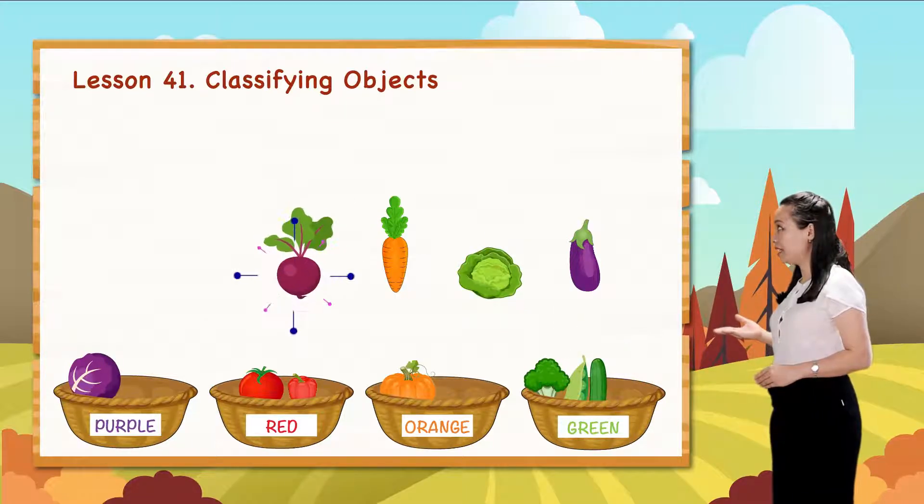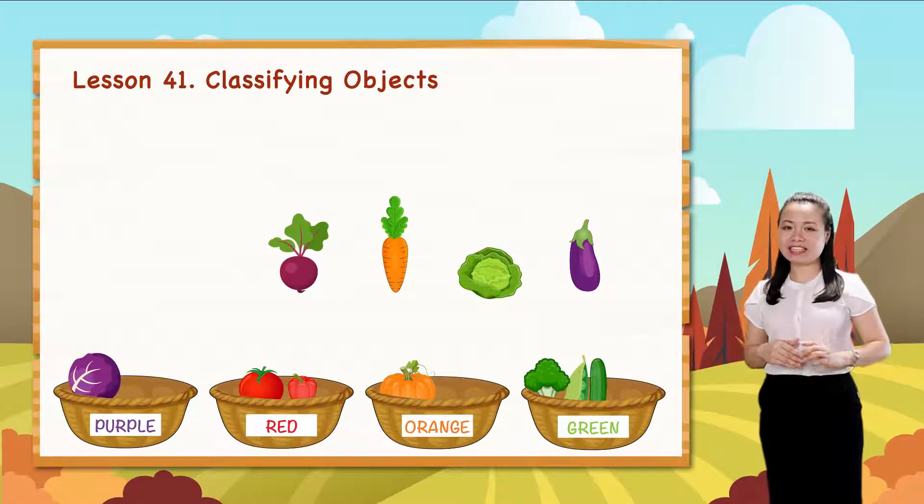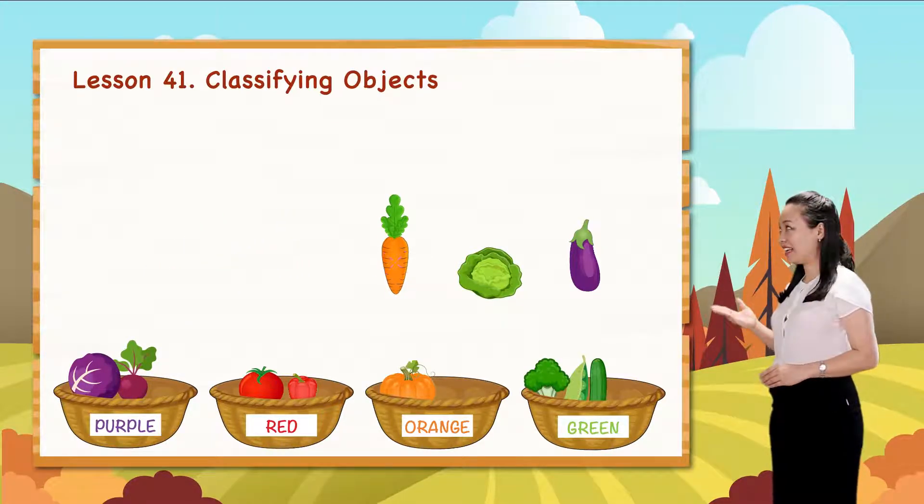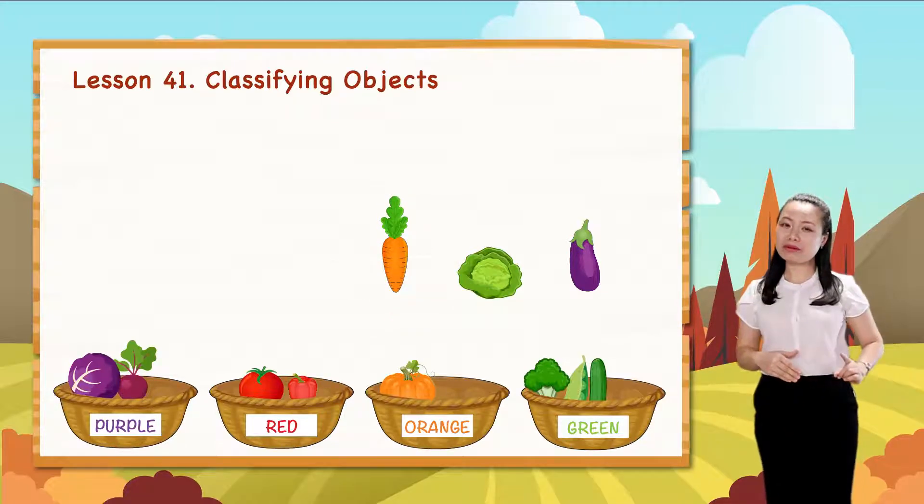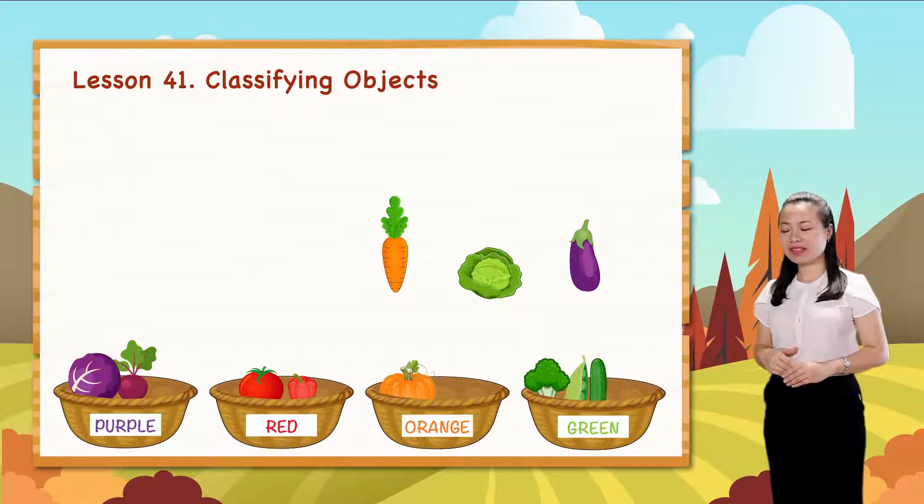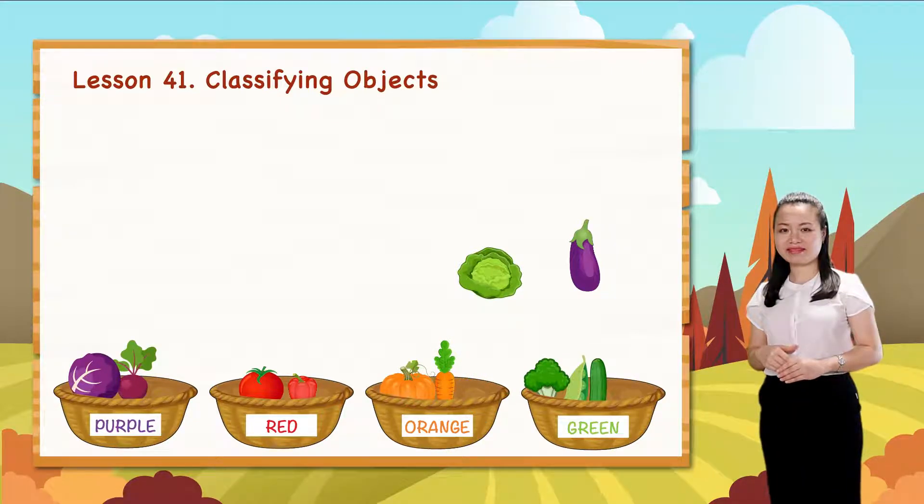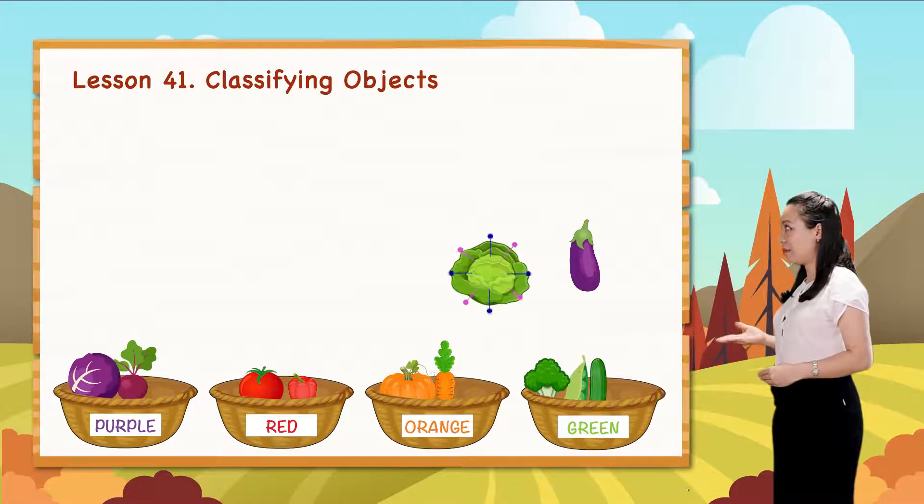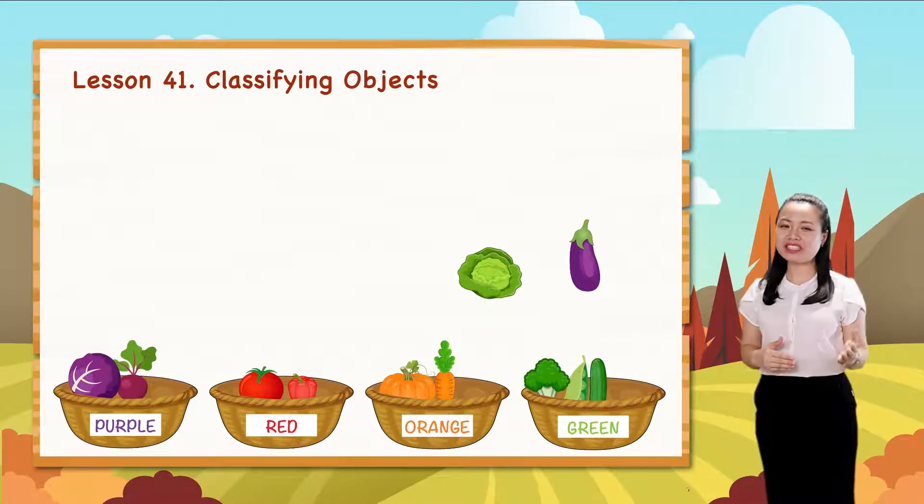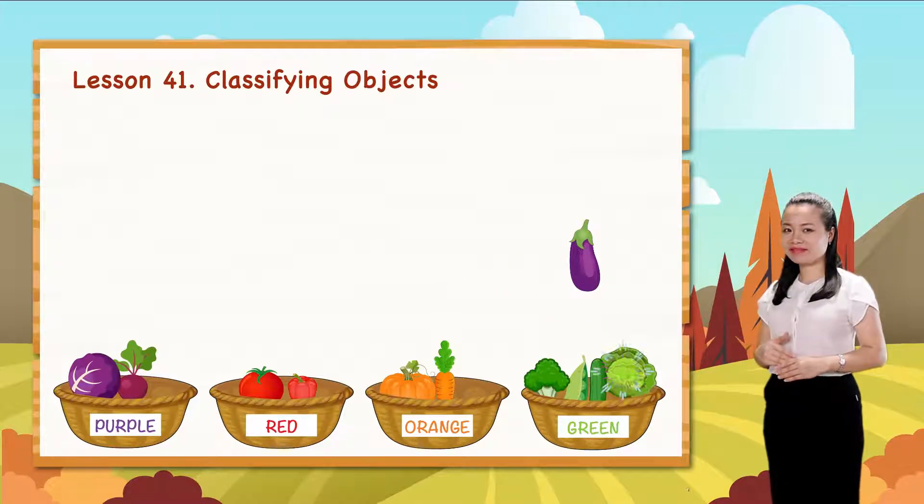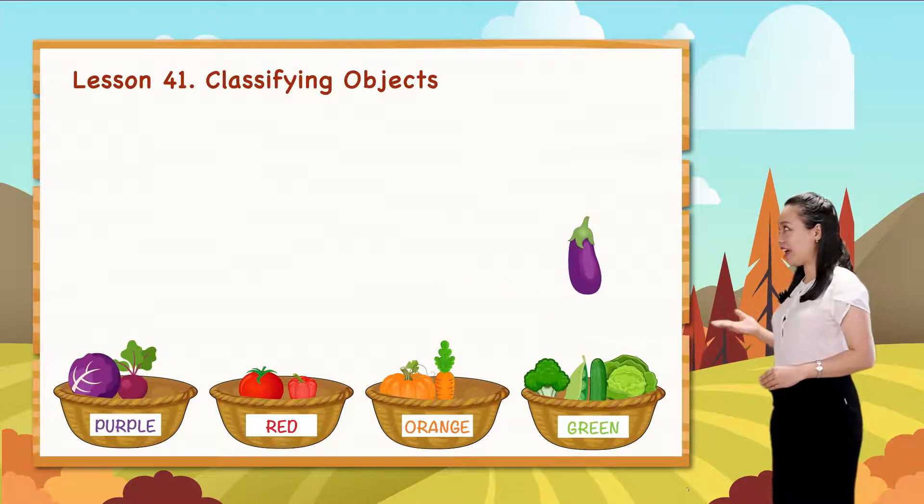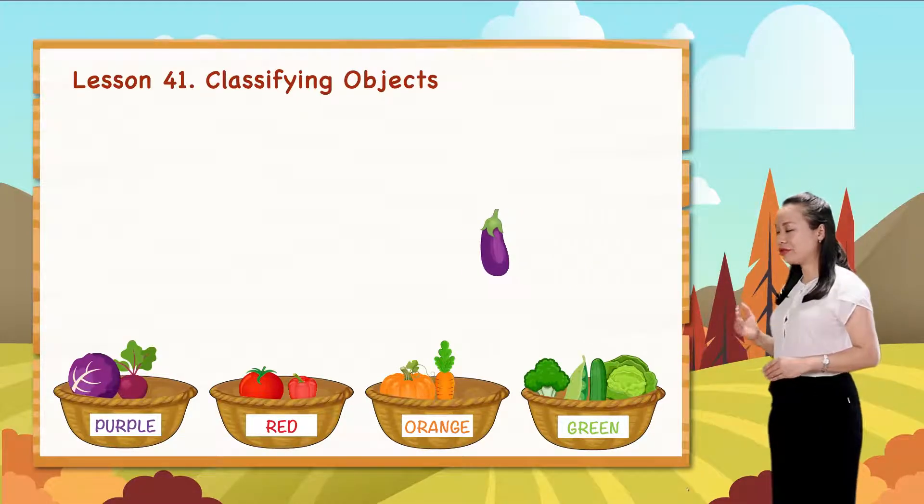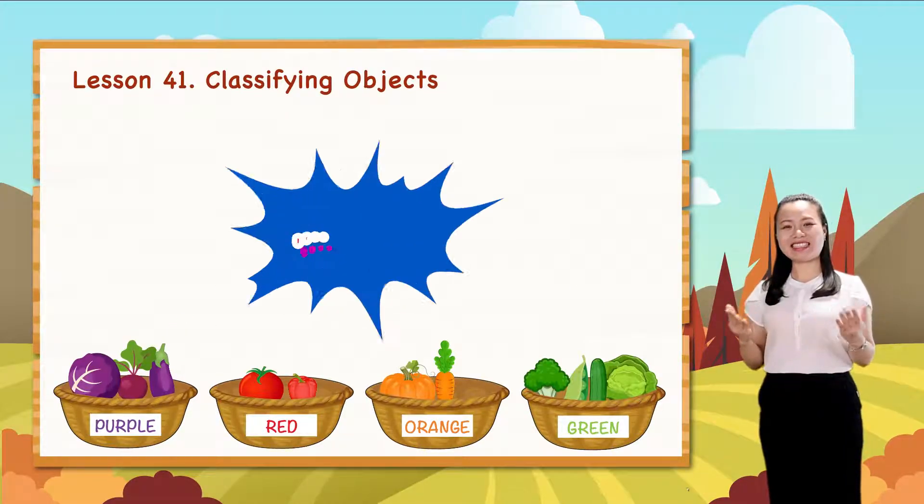A beet. Put it into the purple group. A carrot. Put it into the orange group. A cabbage. Put it into the purple group. It's done.